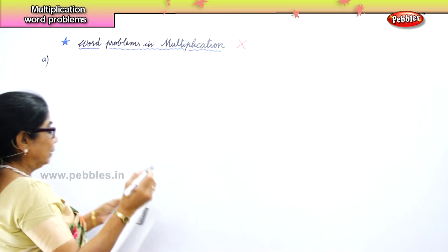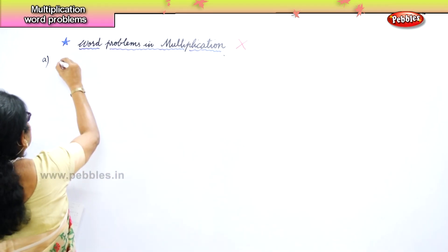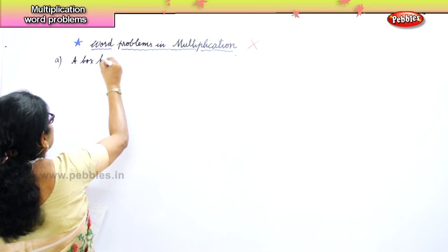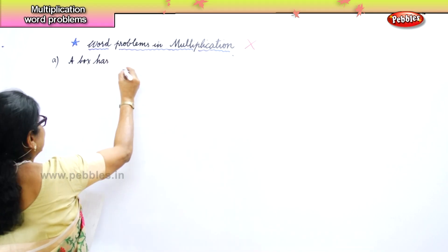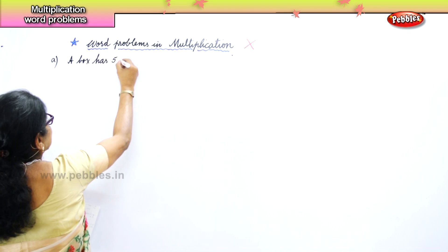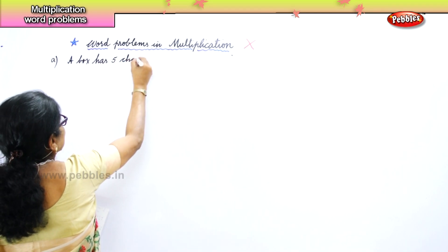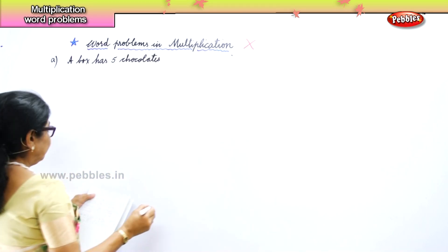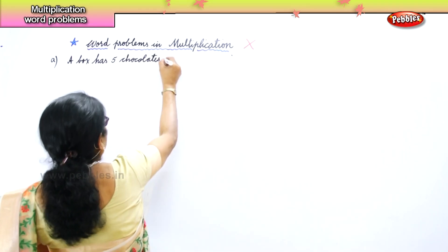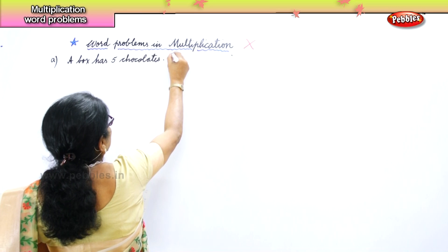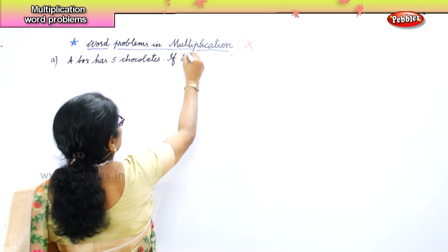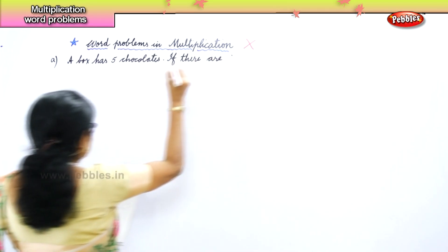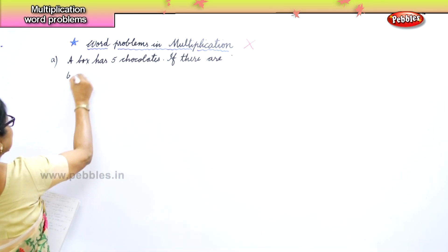The first problem is: a box has five chocolates. There is a box with five chocolates.